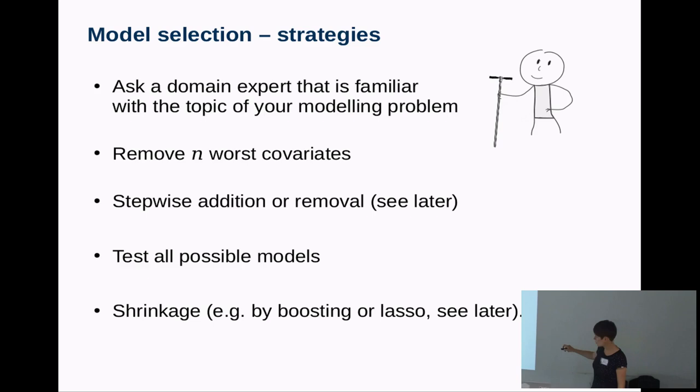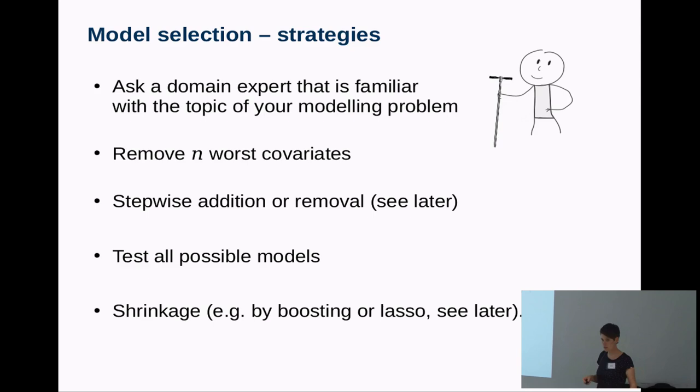We can also use shrinkage, as we saw with the lasso: the algorithm itself already puts some coefficients to zero, meaning the covariate is dropped from the model. The same applies with boosting, because it's a stepwise forward learning algorithm — if a covariate is not selected during the algorithm, it's also excluded.